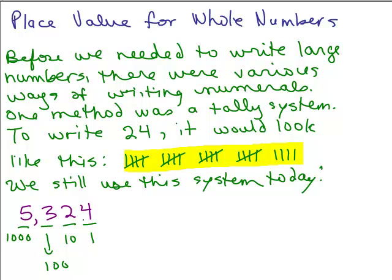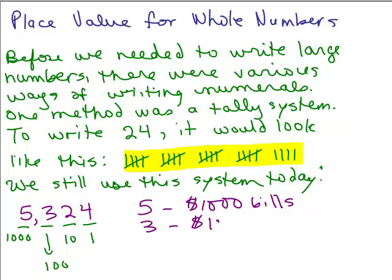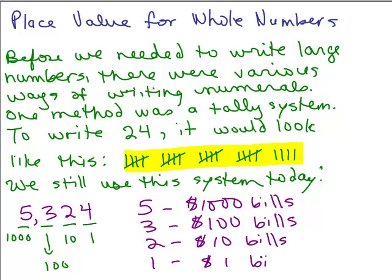You can think about this with money. If you had $5,324, you might have 5 one-thousand-dollar bills, 3 hundred-dollar bills, 2 ten-dollar bills, and 4 ones. So this really represents 5 thousand-dollar bills — I don't even know if there are thousand-dollar bills, but if there were, there would be 5 of them — plus $300, 2 ten-dollar bills, and 1 one-dollar bill.